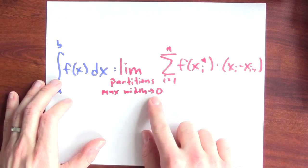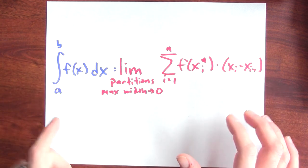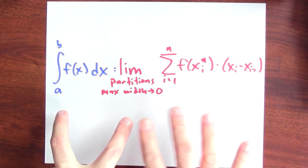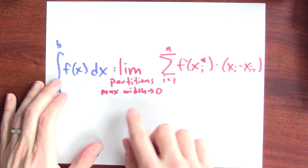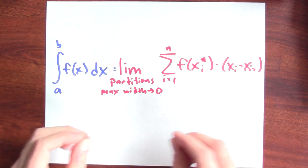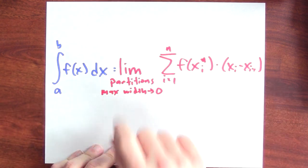I have to say that the maximum width goes to zero to prevent some sort of bizarre scenario where I've got one really big sub interval and then lots and lots of small sub intervals. I want to make sure that all of those sub intervals are getting very narrow so that I'm getting a very fine partition in the limit.